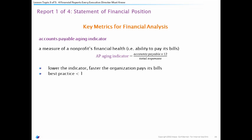Another metric is the accounts payable aging indicator. You take your accounts payable, multiply by 12, and divide by your total expenses. It's basically a measure of organizational health because it shows how quickly you're paying your bills. This is really interesting to watch over time — if the AP aging indicator is getting larger over a series of years, that's an indicator the health of the organization is declining because they're paying bills more slowly.